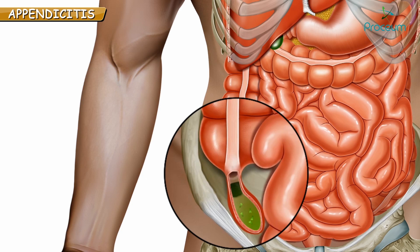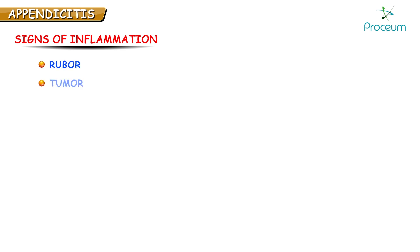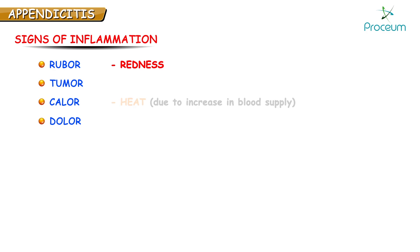Since the appendix is now inflamed, the cardinal signs of inflammation should come to mind: rubor, tumor, calor, dolor. So the appendix is red, it is hot, it has grown in size, and it is causing severe pain.